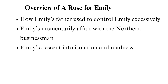The plot of A Rose for Emily focuses on the life of Emily, a reclusive woman from a southern town and from a once prominent family. The plot is narrated in a non-linear fashion, whereby Faulkner keeps shifting between the present and the past. Some crucial events include how Emily's father used to control Emily excessively, Emily's momentary affair with a northern businessman, and Emily's descent into isolation and madness. It is not until the end of the book that the full magnitude of the disturbing and tragic reality of Emily is brought to light.